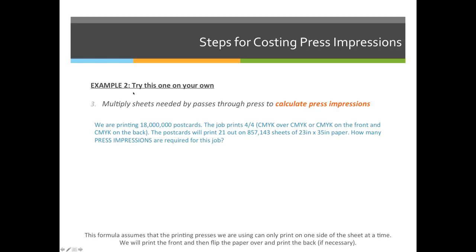Let's try another example and see if you can calculate the total number of press impressions required for this job. We're printing 18 million postcards. The job prints 4 over 4, CMYK over CMYK — CMYK on the front and CMYK on the back. The postcards will print 21 out on 857,143 sheets of paper. How many press impressions are required for this job?